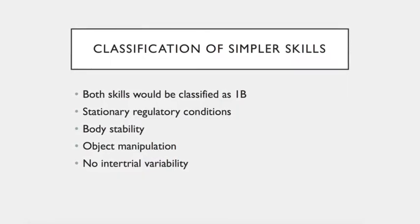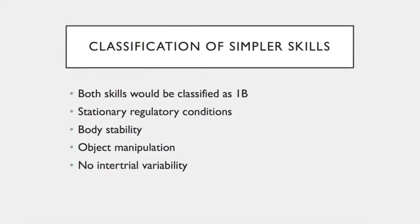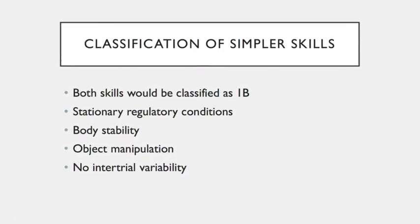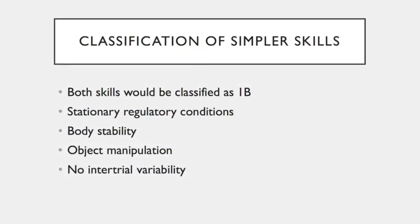In 1B, there are stationary regulatory conditions, body stability, object manipulation, and no inter-trial variability.